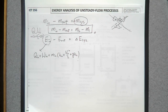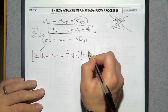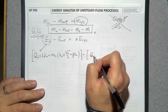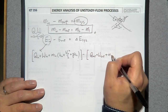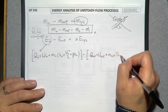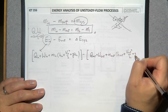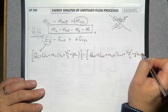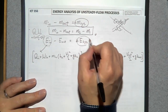For energy transfer out of the system, we use the same terms: heat transfer Q, energy transfer by work W, plus mass transfer. Mass leaving the system M_out carries enthalpy, kinetic energy, and potential energy. The difference between energy transfer in and energy transfer out is the change of energy of the system.